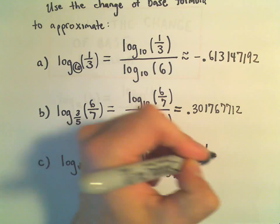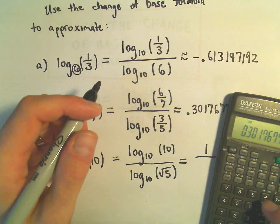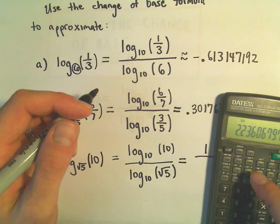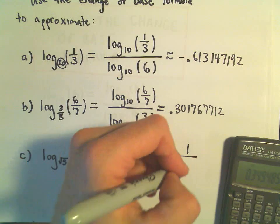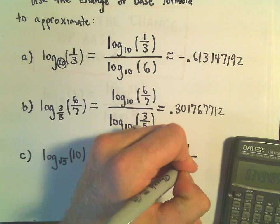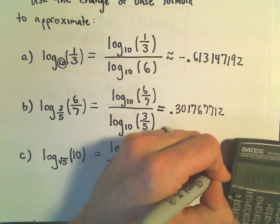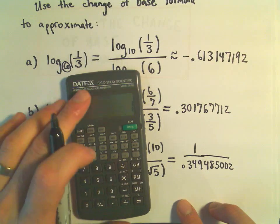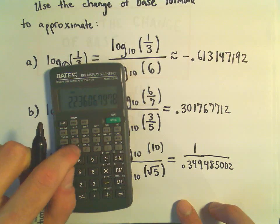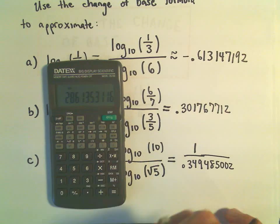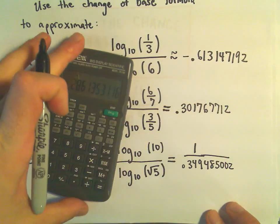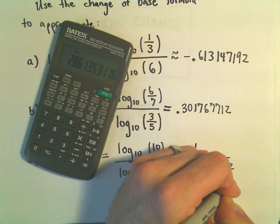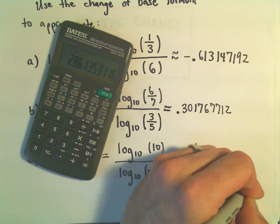Log base 10 of 10 is just 1. So if I take 5, the square root of that, that's roughly 2.236. I'm going to take log base 10 of that. And I'm getting 0.349485002. So if I do 1 divided by that, I'm getting this to be roughly equal to 2.861353116.